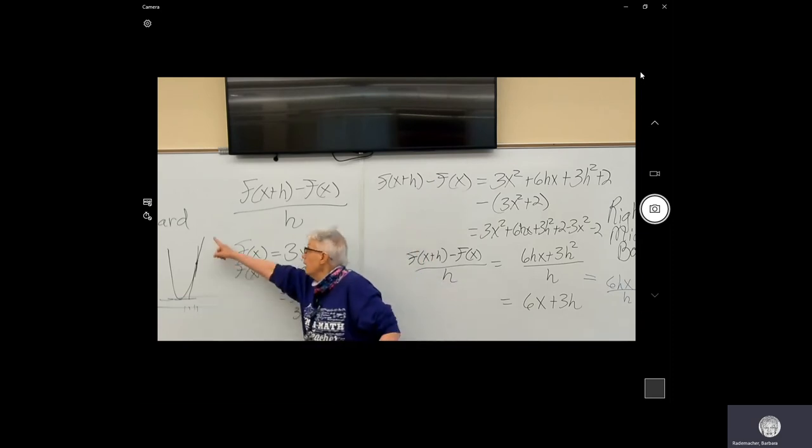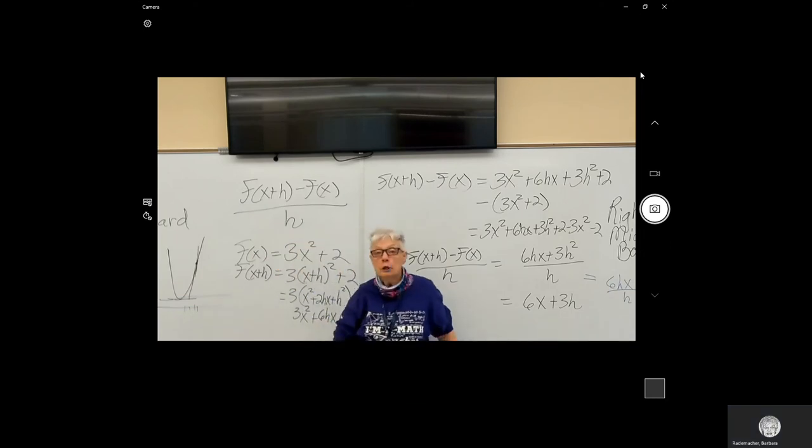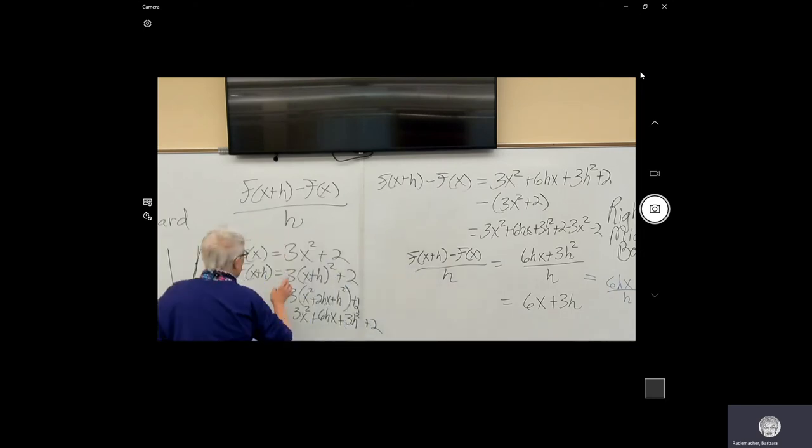What line? A line that's tangent to a curve, in this case, to the graph of 3x squared plus 2.